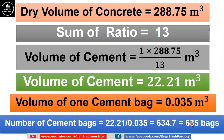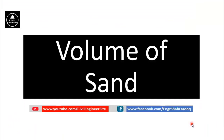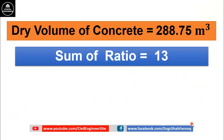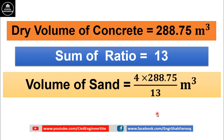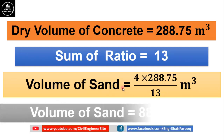Now by using the same method, we will calculate the volume of sand. Volume of sand will be equal to 4 multiplied by 288.75 divided by 13. This 4 is the ratio of sand or fine aggregate. After doing simple calculation, we get volume of sand as 88.85 cubic meters.